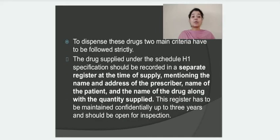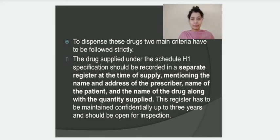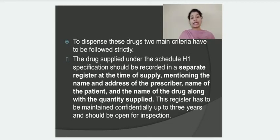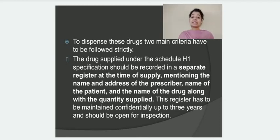There are two important criteria to keep in mind when dispensing Schedule H1 drugs. First, the drug dispensed under this category should be recorded in a separate register. In the register, you should mention the name and address of the prescriber, the name of the patient, the name of the drug being dispensed, and the quantity given to the customer. The register must be maintained properly and produced at the time of inspection, and the record should be kept safely for a period of three years.